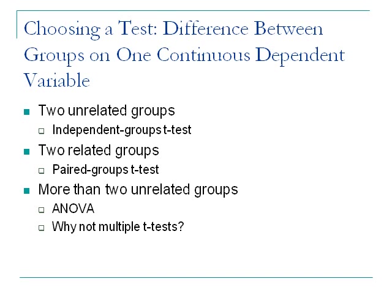ANOVA is one test to see if there is some difference among groups related to the independent variable. The drawback is you can't stop there. If you have a significant ANOVA with groups one, two, and three, you know the independent variable had some effect — but what was the effect? Are all those groups different from each other? It could be all groups are significantly different, or just one group difference is driving the significant ANOVA. So you have to do post-hoc tests.